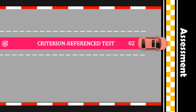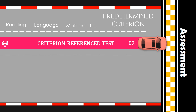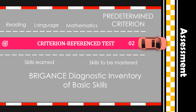Number two is criterion reference test. Criterion reference tests in specific subjects like reading, language, and mathematics are used to determine the mastery level of predetermined criteria that a student should be capable of achieving. The specific skills already learned are identified as well as those that have yet to be mastered. A widely used American criterion reference test is the Brigance Diagnostic Inventory of Basic Skills.